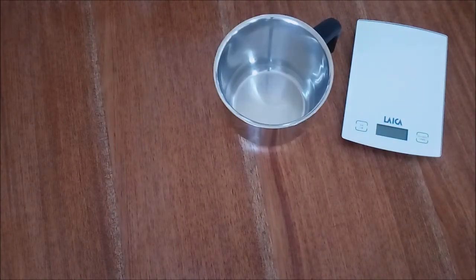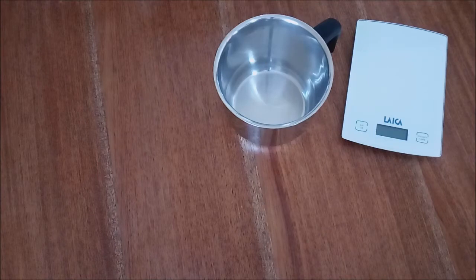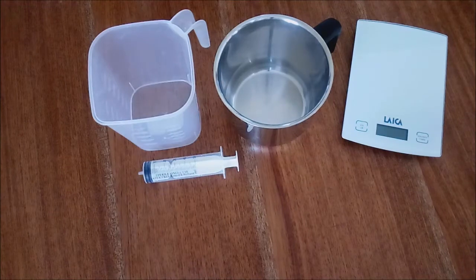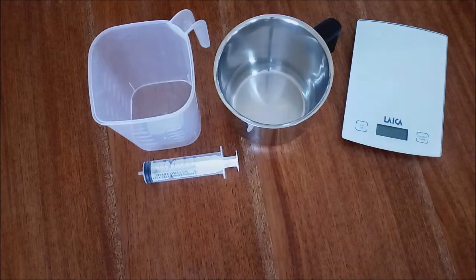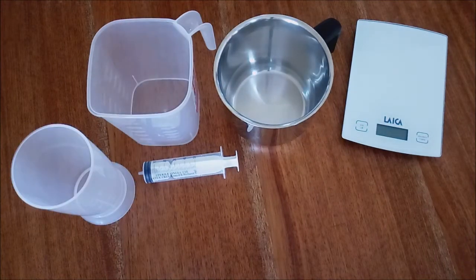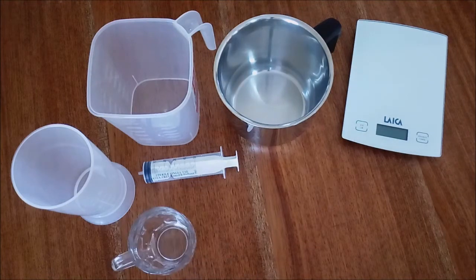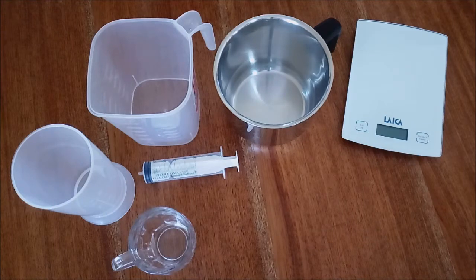The necessary materials are one kitchen scale, one stainless steel pan (never use aluminum as it reacts with soda), one container to measure oil, one feeding syringe may be useful, one container to measure water, and one container to measure soda. These containers can be made of glass, stainless steel or plastic, never aluminum.